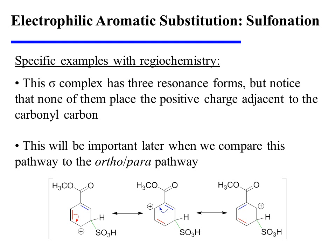This sigma complex has three resonance forms. Notice that none of them place the positive charge at a location that is adjacent to the ester bonded to the ring. This will be important later when we compare this pathway to the ortho- and para-pathways.